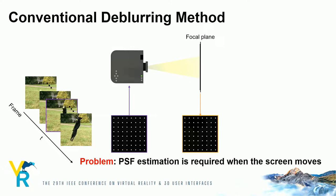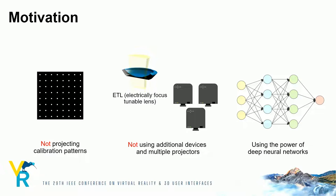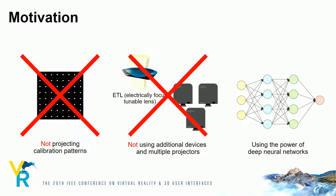We explain the motivation of our research for projector de-blurring. First, we don't project calibration patterns like a dot pattern. Second, we don't use additional devices or multiple projectors. Finally, we use the power of deep neural networks.